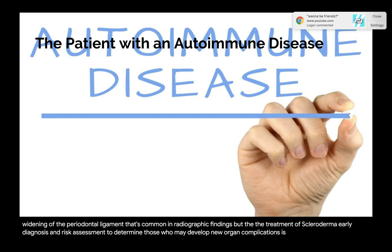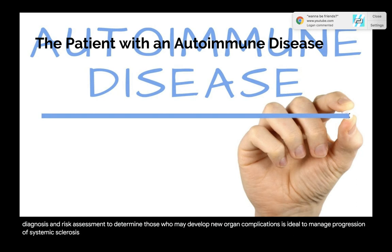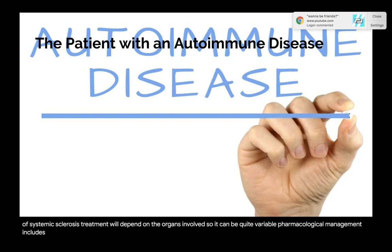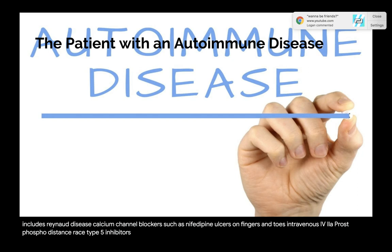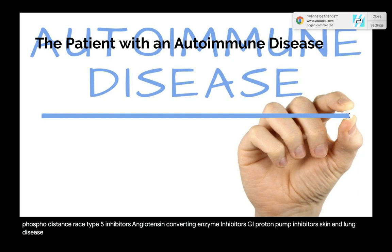Treatment of scleroderma: early diagnosis and risk assessment to manage progression are ideal. Treatment depends on the organs involved and can be variable. Pharmacological management includes: calcium channel blockers such as nifedipine for Raynaud's; IV iloprost and phosphodiesterase type 5 inhibitors and bosentan for finger/toe ulcers; ACE inhibitors for renal involvement; proton pump inhibitors for GI; methotrexate and cyclophosphamide for skin and lung disease; and hematopoietic stem cell transplantation for progressive disease.